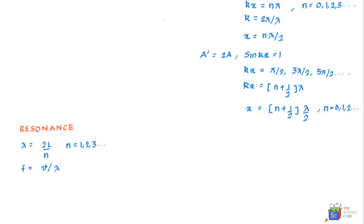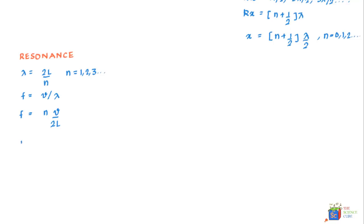And the corresponding resonant frequencies would be F is equal to V upon lambda. And if we substitute the value of lambda in this equation what we get is F is equal to N times V upon 2L. And for N is equal to 1 we get F1 is equal to V upon 2L.